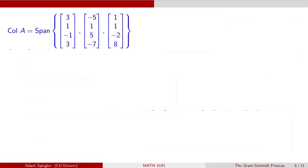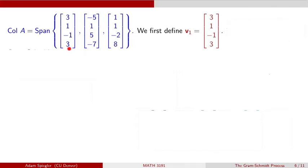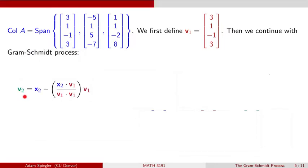Now that we have a basis for the column space of matrix A, let's go through the Gram-Schmidt process to find an orthogonal basis for this same subspace. We define V1 to be the very first vector in this basis, which is (3, 1, −1, 3). Then V2 is the complement to the orthogonal projection of X2 onto the subspace spanned by V1 — we find the weight, multiply it by V1 to get the orthogonal projection, then subtract that from X2.